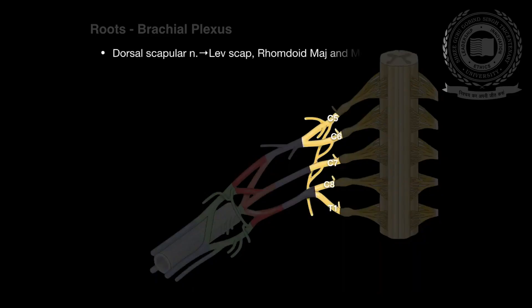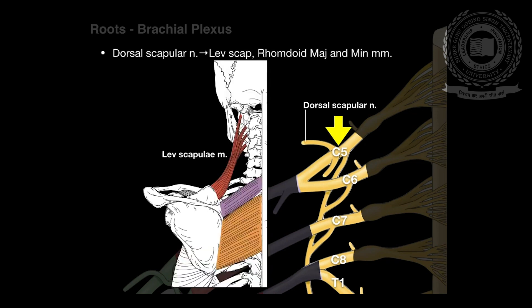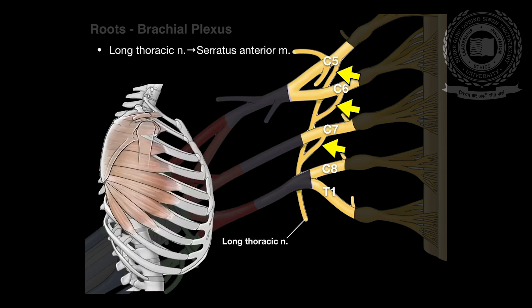The branches of the roots: there are a few branches which originate from the roots of the brachial plexus. The dorsal scapular nerve originates from the C5 root and supplies the levator scapulae, rhomboids major, and rhomboids minor muscles. Another branch is the long thoracic nerve, which takes origin from C5, C6, and C7 roots of the brachial plexus, and is responsible for innervation of the serratus anterior muscle.